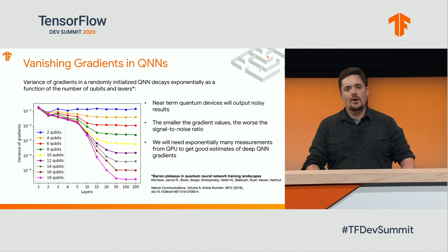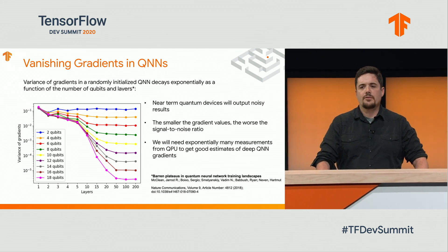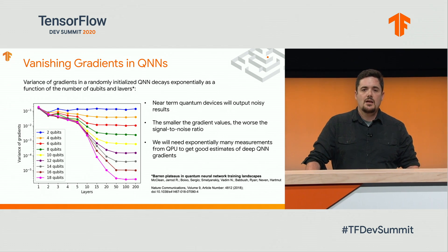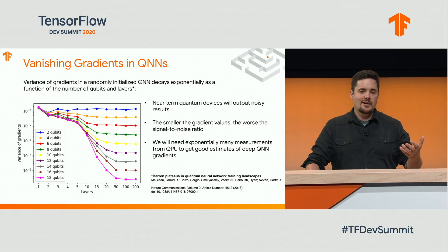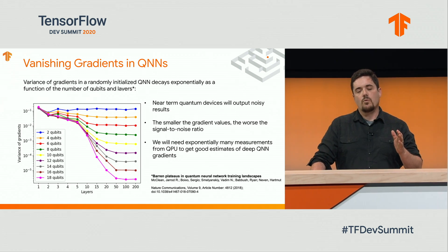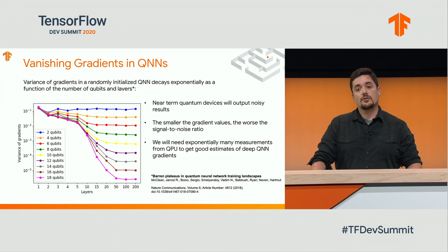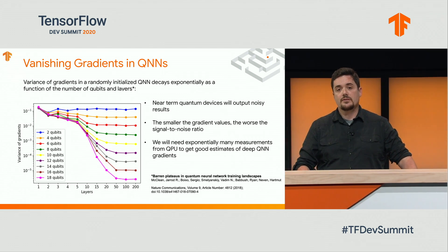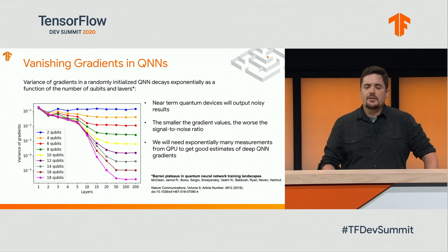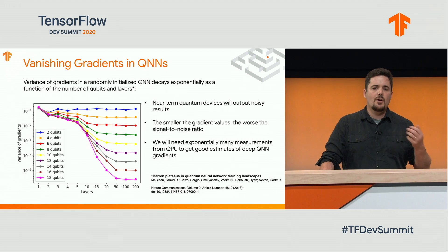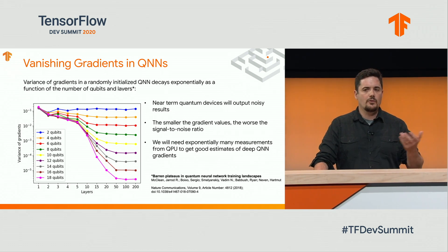A known problem for quantum neural networks is what's called the Barren Plateau problem. Essentially what it identifies is that as the depth of a quantum neural network grows, the variance of the gradients in randomly initialized quantum neural networks decay exponentially as a function of the number of qubits. Given this problem, we developed this technique: layer-wise learning.